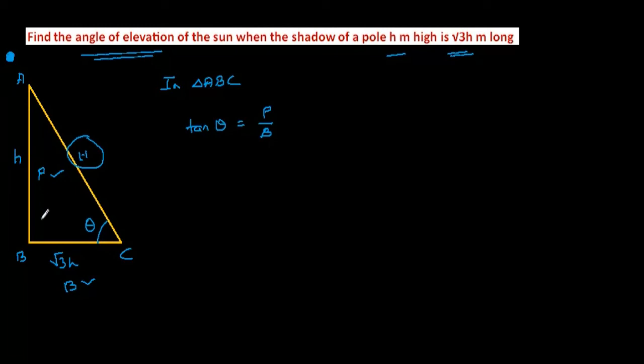So tan theta equals perpendicular by base. Perpendicular is h and base is root 3 h. H cancels out, and we're left with tan theta equals 1 by root 3.